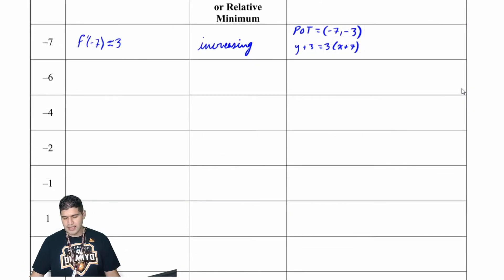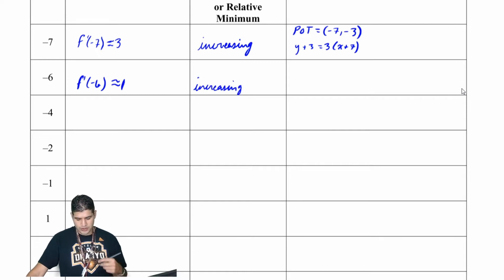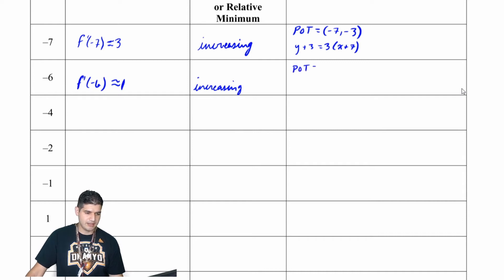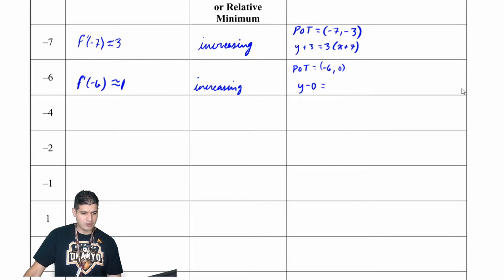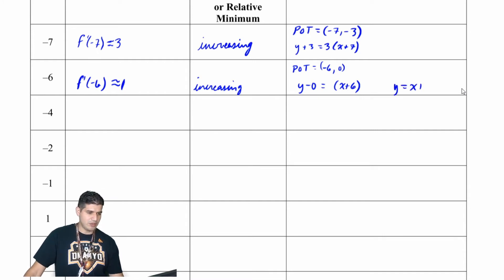At x equals negative 6, f prime of negative 6 is approximately 1, and the graph is increasing. My point of tangency is negative 6 comma 0, so my equation is y minus 0 equals 1 times x plus 6, which cleans up to y equals x plus 6.